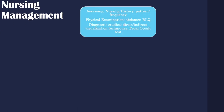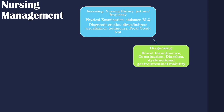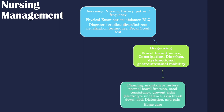For nursing management, begin by assessing the patient's bowel patterns — how often they defecate and when was their last bowel movement. Perform a physical examination starting in the right lower quadrant. Review diagnostic studies, including direct and indirect visualization techniques for the colon or small intestines, and the fecal occult blood test to check for blood in the feces. Normal labs can also review electrolytes and look for imbalances. Nursing diagnoses include bowel incontinence, constipation, diarrhea, dysfunctional gastrointestinal motility, and risk for fluid and electrolyte imbalance. Plan goals to maintain or restore normal bowel function, stool consistency, and prevent risks such as electrolyte imbalance, skin breakdown, abdominal distention, and pain.